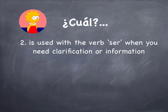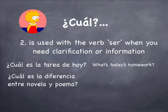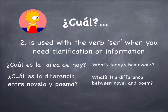The second use of Cuál is with the verb ser when you need clarification or information. Remember that with Qué you use it for an explanation or definition, but Cuál is when you need clarification or information. For example, ¿Cuál es la tarea de hoy? — What's today's homework? ¿Cuál es la diferencia entre novela y poema? — What's the difference between novel and poem?